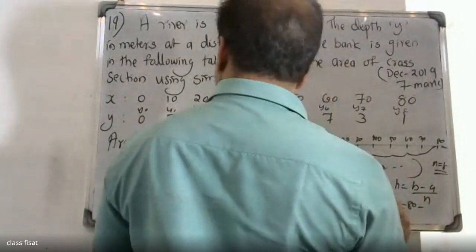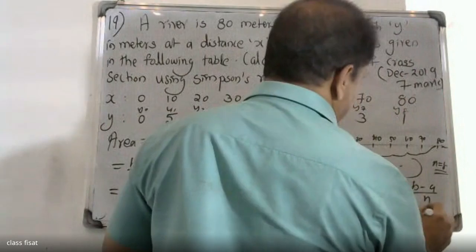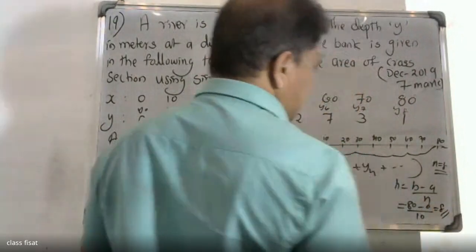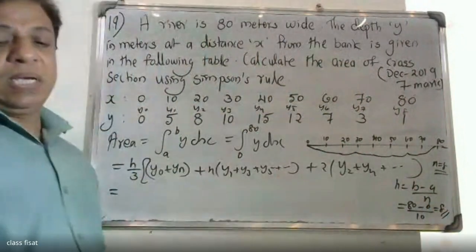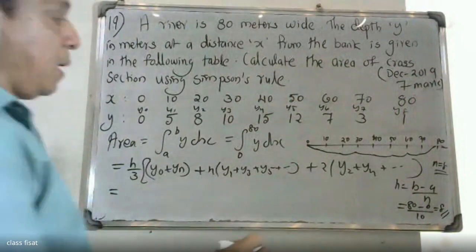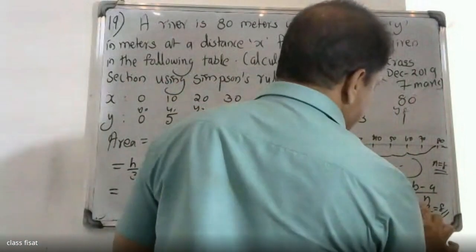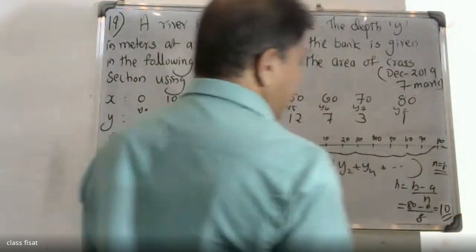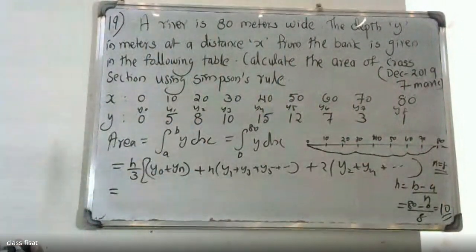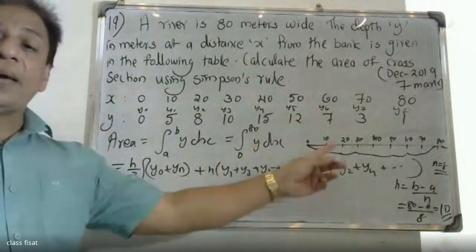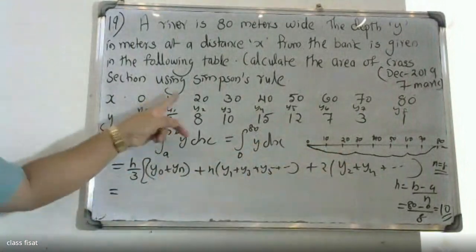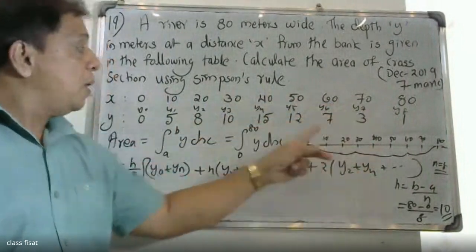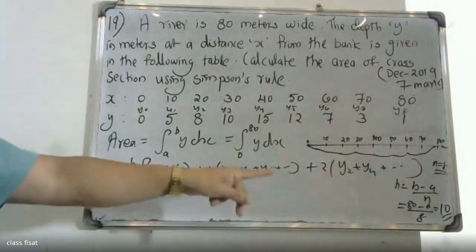H is equal to (b minus a) divided by N, which is (80 minus 0) divided by 8, giving H equal to 10. The number of intervals is 8.